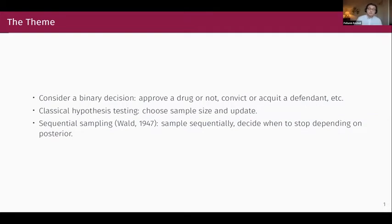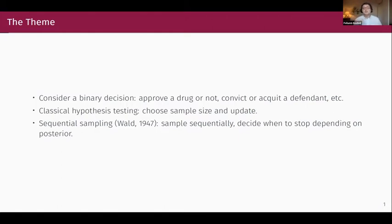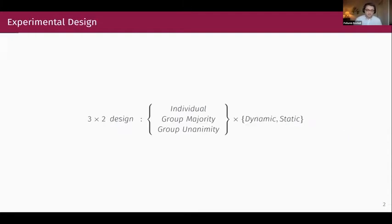However, in 1947, Wald said we should be able to do better. Here's exactly how: you pose your hypothesis — some A versus some B — and you start collecting information sequentially. You keep collecting information until you're sufficiently convinced towards A or towards B so that you can make a decision. It can be shown theoretically that this will outperform and be more efficient than classical hypothesis testing, and the difference between these two mechanisms is at the heart of our experiment.